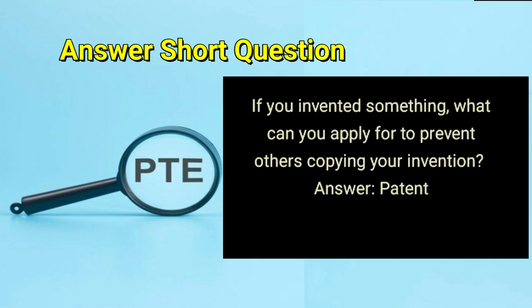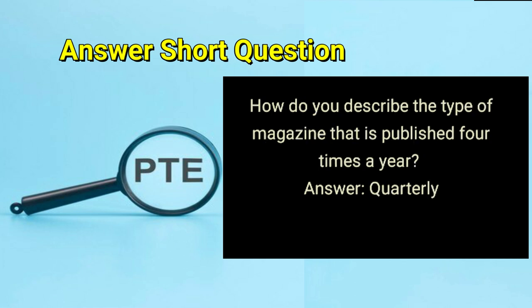If you invented something, what can you apply for to prevent others copying your invention? Answer: patent. How do you describe the type of magazine that is published four times a year? Answer: quarterly.